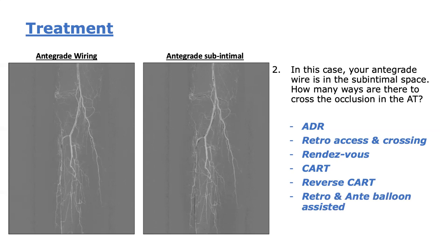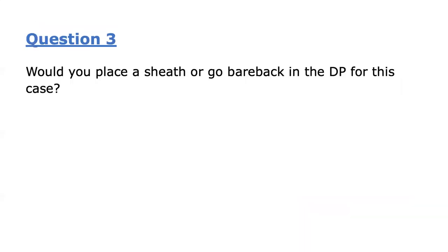Finally, if these methods fail, another backup strategy involves advancing balloons from both antegrade and retrograde access sites into contiguous subintimal spaces, and getting the wire to cross from one space to another while the balloons are being deflated.